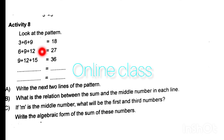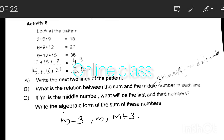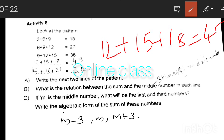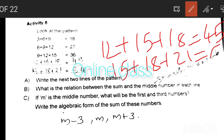Look at the pattern: 3, 6, 9 (sum 18); 6, 9, 12 (sum 27); 9, 12, 15 (sum 36); 12, 15, 18 (sum 45). What is the relation between the sum and the middle number in each row? The sum is 3 times the middle number.